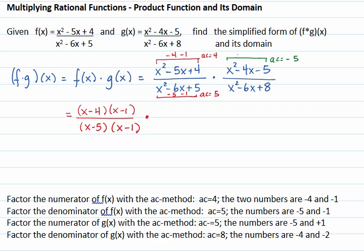We factor the denominator of g of x with the ac method. ac is 8. Two numbers that multiply to 8 and add to negative 6 are negative 4 and negative 2. The factorization is x minus 4 times x minus 2.